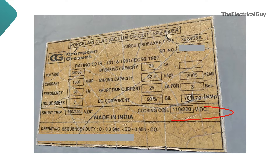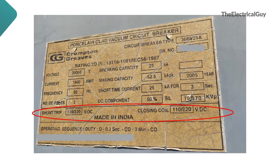Next, the voltage rating of the trip coil and closing coil is mentioned. The trip coil is also called a shunt trip coil. The voltage is generally DC voltage because the function of the closing coil and tripping coil is very important, and hence it needs a steady and constant supply, which can be provided by battery banks. This voltage is also called control voltage as it controls the opening and closing operation of the breaker. Generally it is either 110 V or 220 V DC — at least in India. It is a very rare case where dual control voltages are provided.